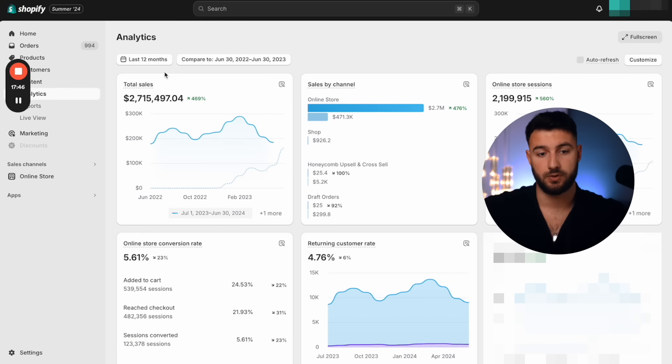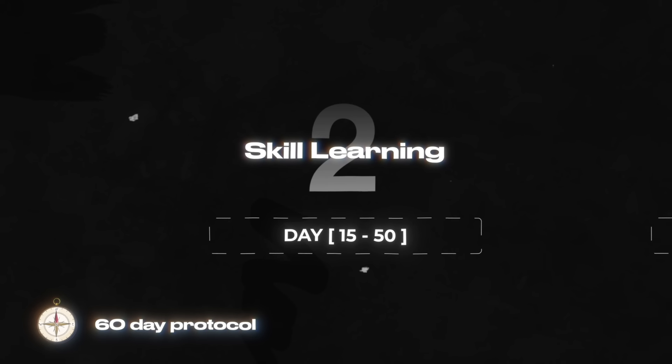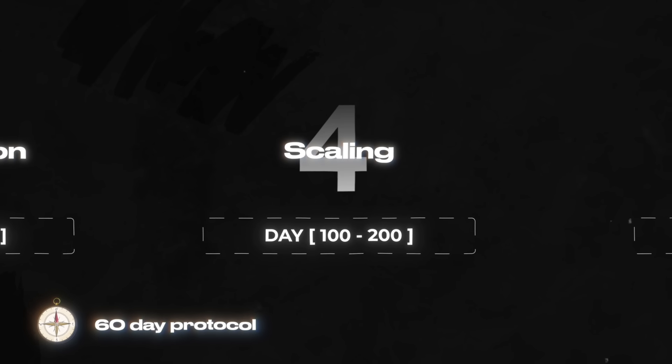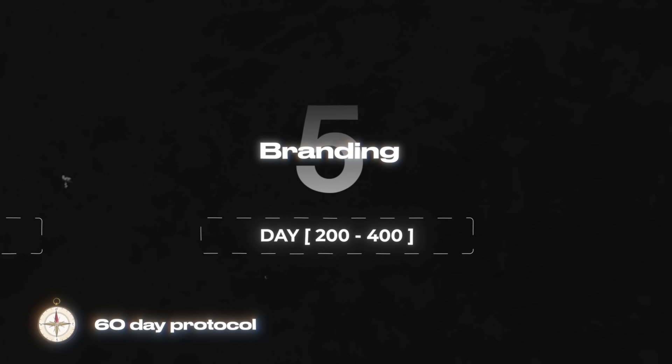Our portfolio of stores makes multiple seven figures every single year — one store alone made $2.7 million in the last 12 months. I'm not saying this to flex; I just want to show you that you can turn this into a very long-term business that makes you money for years. To summarize your whole journey: day 1-15 is the product research phase, day 15-50 is skill learning, day 50-100 is the conversion phase, day 100-200 is scaling, and day 200-400 is branding and outsourcing. Getting to the branding and outsourcing phase will most likely take more than a year — having a real brand with people managing everything is not easy.